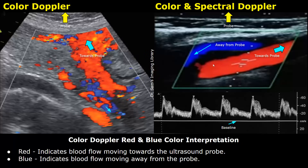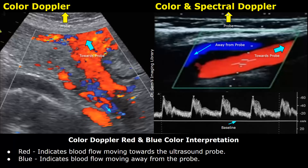This blood vessel is filled with red color because blood is moving towards the top of the image, towards the ultrasound probe. If you look at the red vessel, you can see the red color is getting nearer and nearer to the top of the image — blood is moving in this direction and towards the probe. Whereas in the blue vessel, blood is flowing away from the top of the image, which is why it is blue.